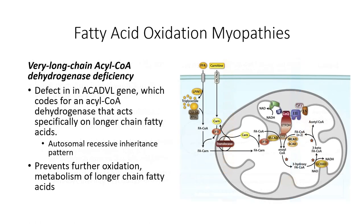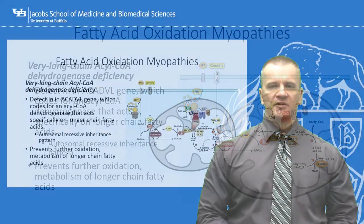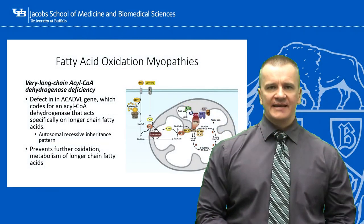A less common form of fatty acid oxidation myopathy results from a defect in the ACADVL gene found on the short arm of chromosome 17, which codes for the very long-chain specific acyl-CoA dehydrogenase enzyme associated with the inner mitochondrial membrane. This enzyme catalyzes the first step in beta-oxidation, specifically targeting the long-chain and very long-chain acyl-CoA molecule. VLCAD deficiency can present with different severities that may involve cardiomyopathy and early death. The milder form appears specific to skeletal muscle and presents in late adolescence with the symptoms characteristic of metabolic myopathies.